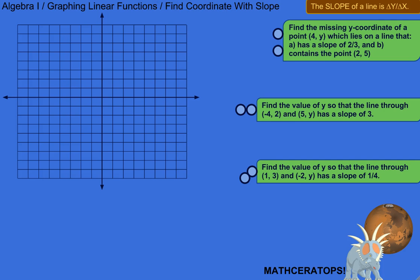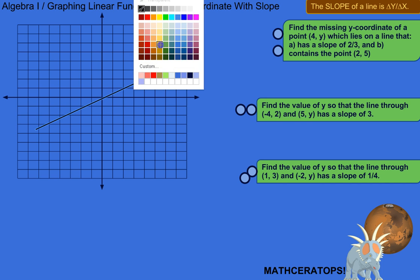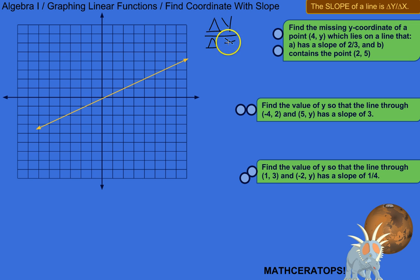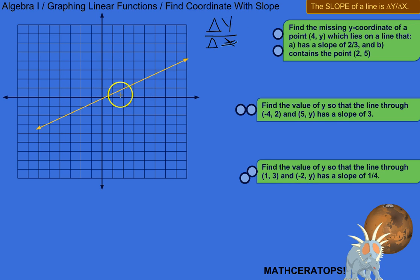Before we get into that, let's just review. The slope of a line is the change in y over the change in x — delta just means change. You might have heard it called rise over run. I like to call it change in y over change in x. So what does this mean? What's the slope of this line? How is y changing relative to how x is changing?